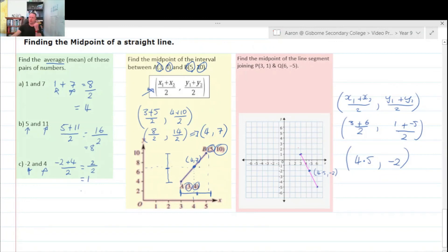Hopefully that's easy enough. Remember, we just find the average. Add your x's together and divide them by 2. Add your y points together, divide them by 2.